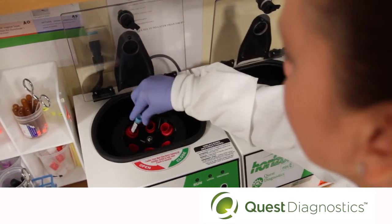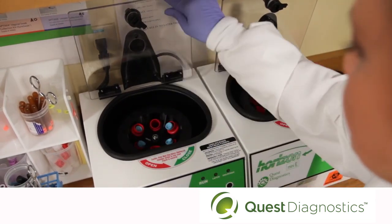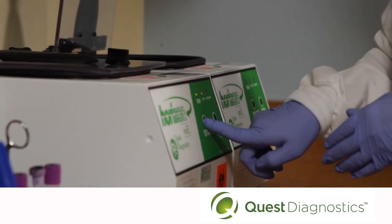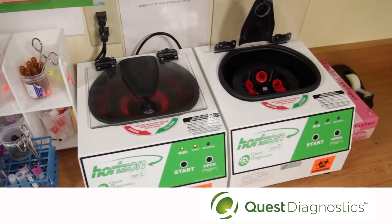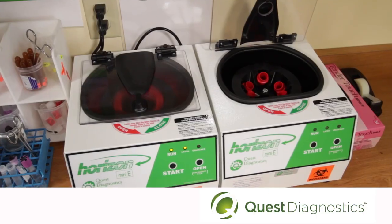After drawing and inverting the specimen the required number of times, your next step is to spin the tubes in the centrifuge. When loading the centrifuge, take care that the tubes are evenly balanced, spun at the proper speed, and for the proper length of time. Centrifuge for 15 minutes at 1500 g within one hour of collecting the specimen.